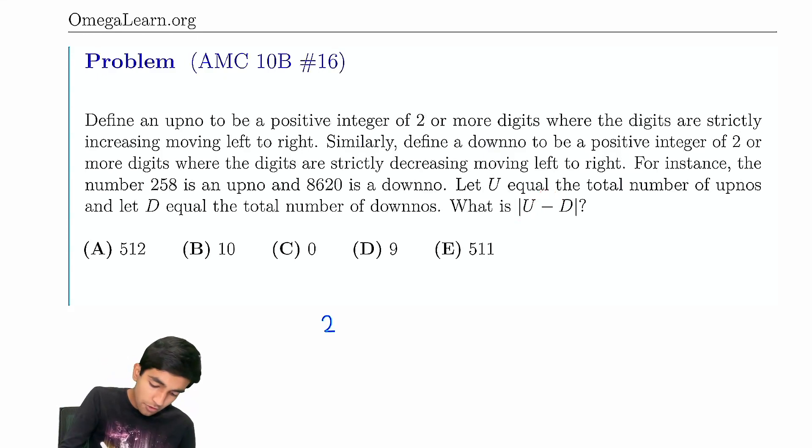The key thing is, let's take 258 like they gave in the problem. This is the upno. Now what happens when we reverse the digits? We get 852.